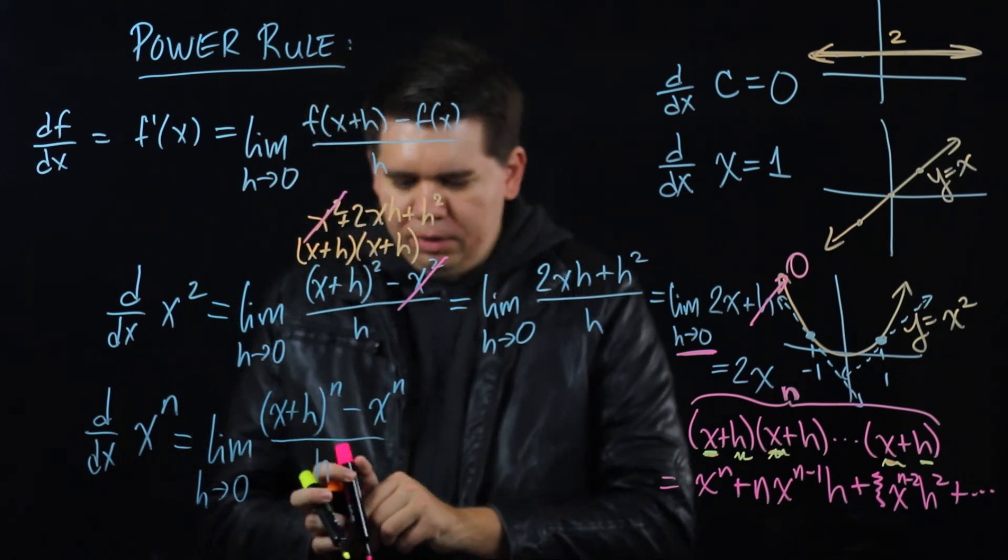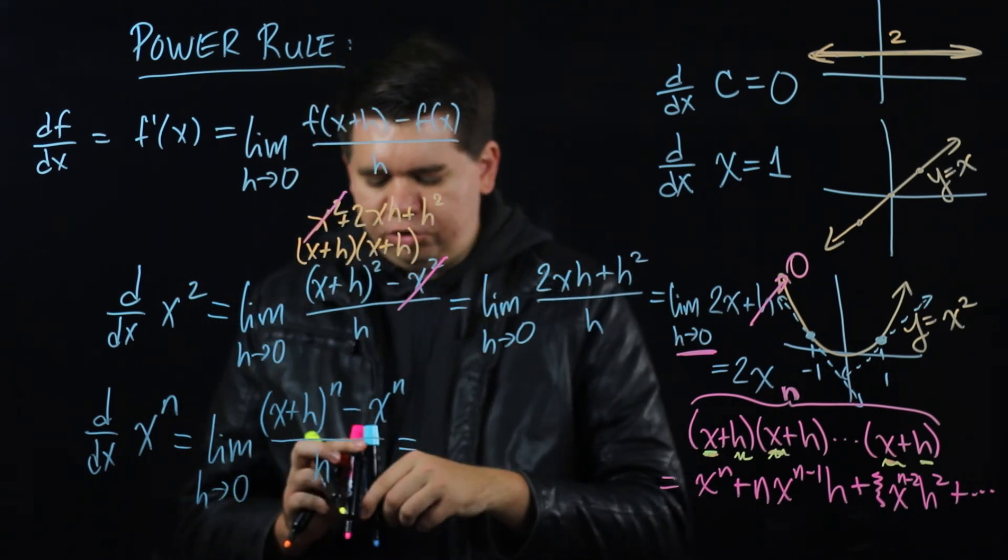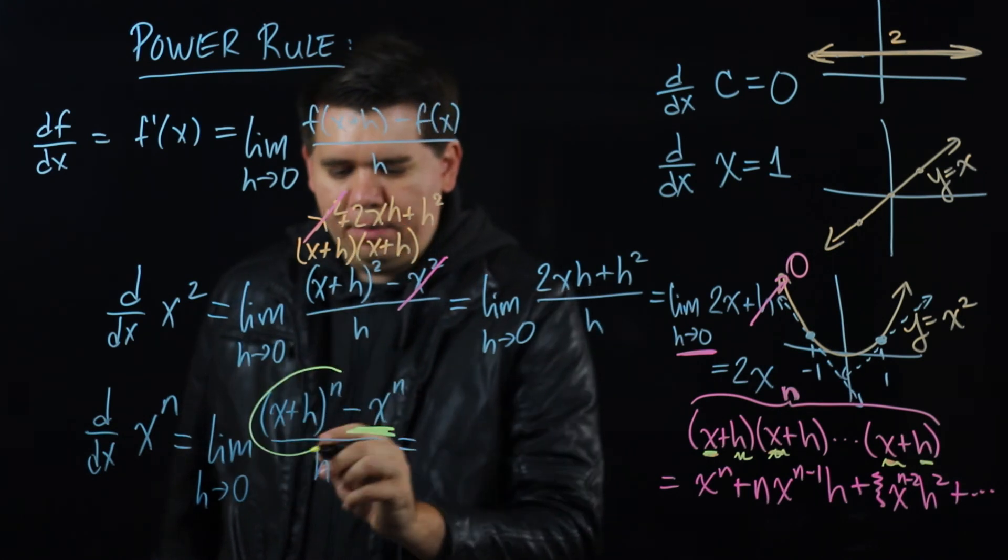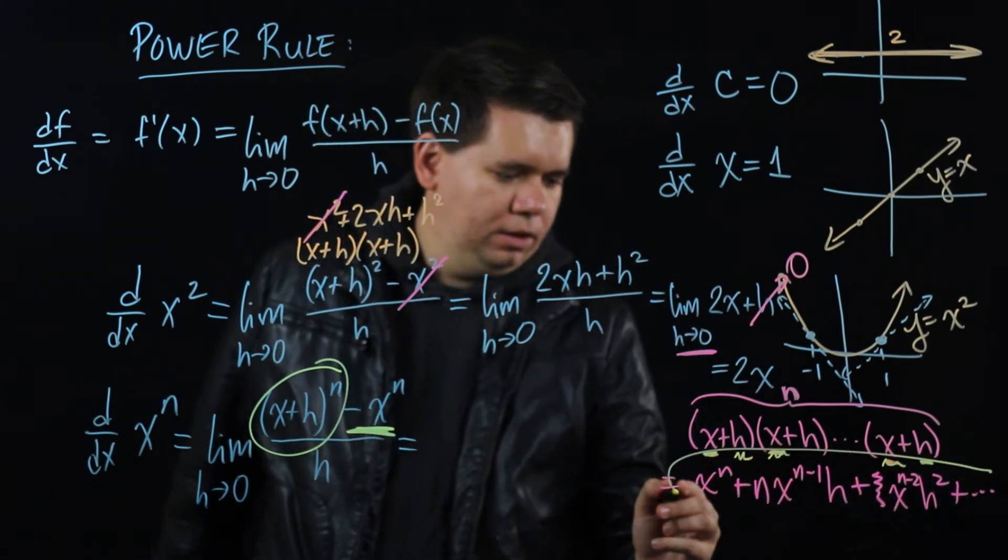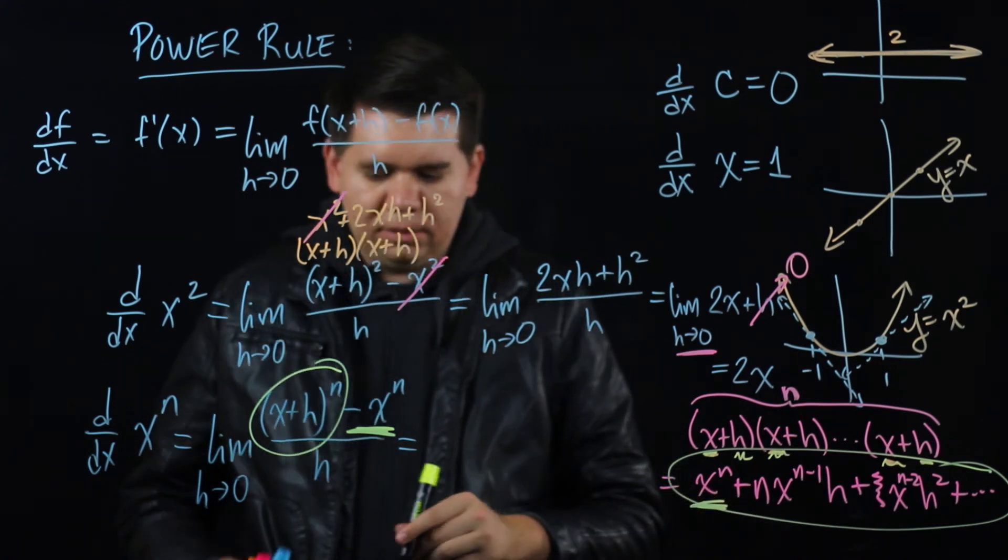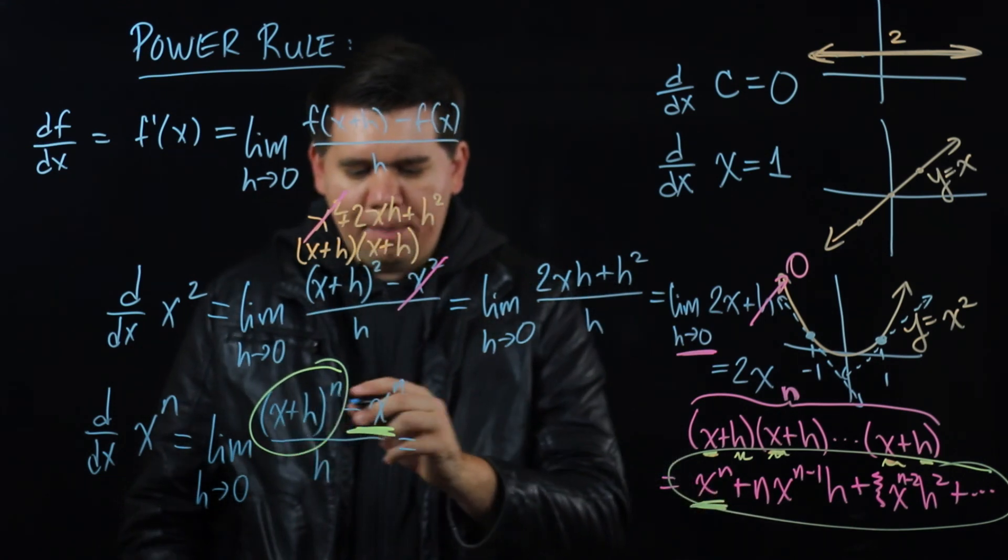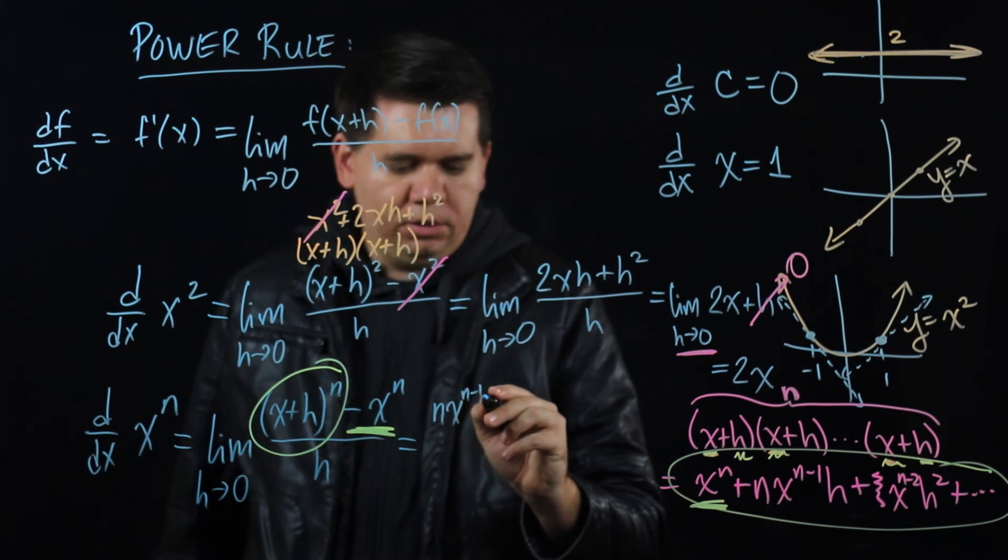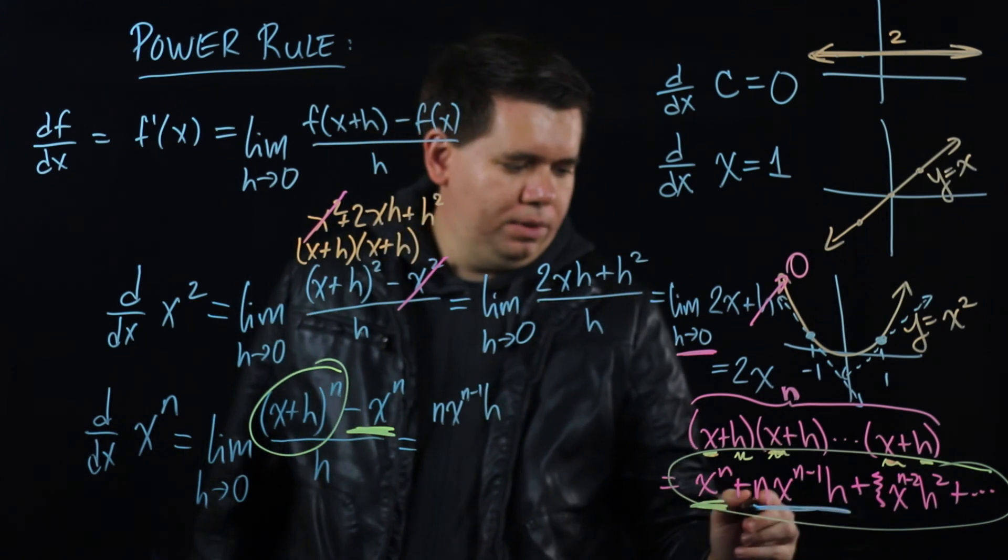So now we're going to subtract off this x to the n piece. Subtracting that off from here, subtracting it from this expression, subtracting off that x to the n piece, will just leave you on the top of your limit with n x^(n-1) h. That's this term right here.